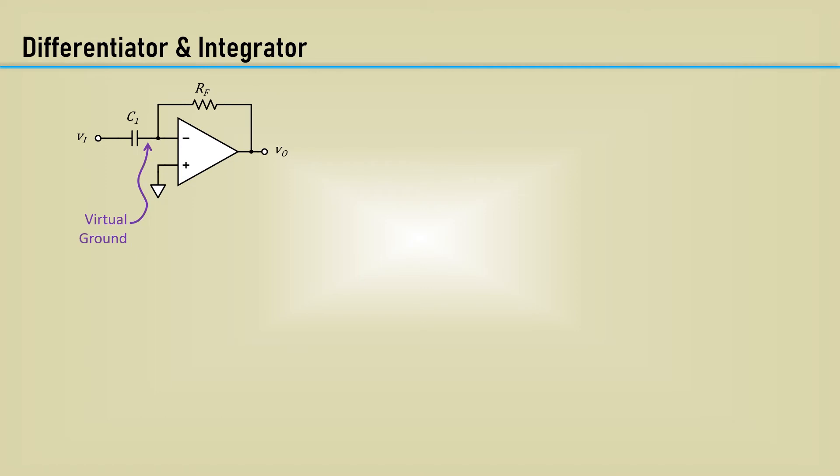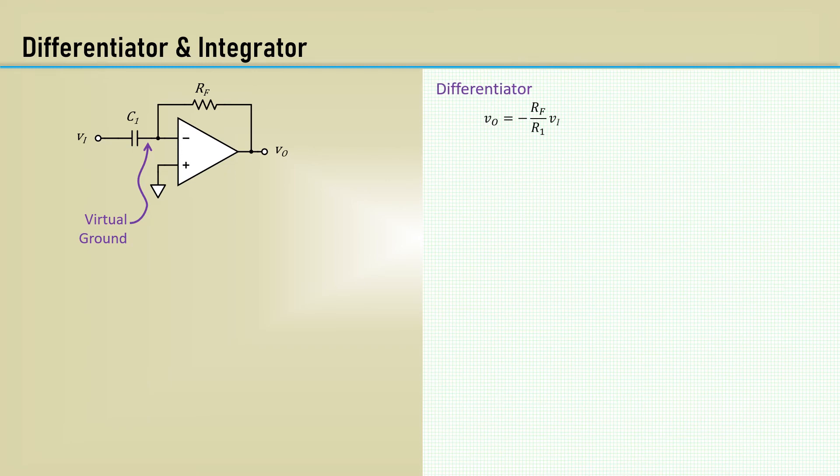Here's the circuit diagram of an op-amp differentiator. A differentiator is a circuit which has an output voltage that is proportional to the time derivative of its input voltage. The circuit is similar to the inverting amplifier, except the resistor R1 is replaced by a capacitor. This equation can be used to solve for the voltage gain transfer function of the differentiator by replacing R1 with the complex impedance of the capacitor.